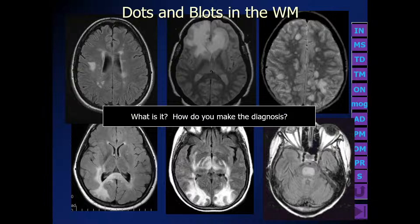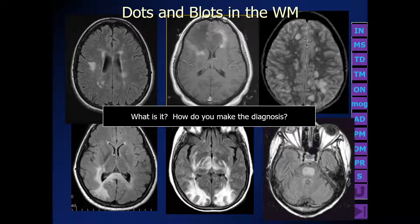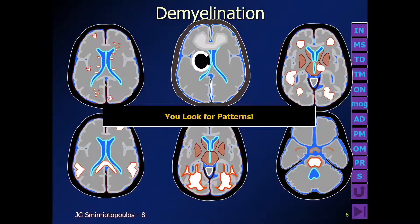Every day we're asked to analyze, understand, explain, and diagnose all kinds of patterns of white matter disease — dots and blots in the white matter. What is it and how do you make the diagnosis? The easiest way to approach the differential diagnosis is to take into context the clinical presentation for the patient, but also to look at the patterns of abnormality in the white matter. We have many different patterns that we can look for.